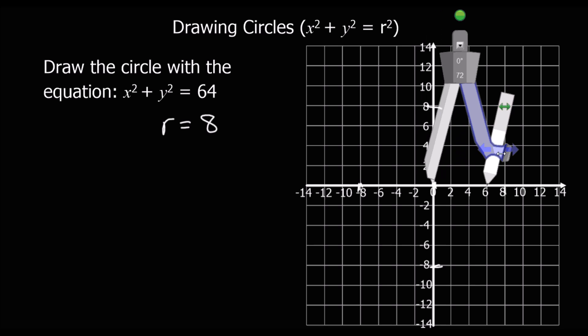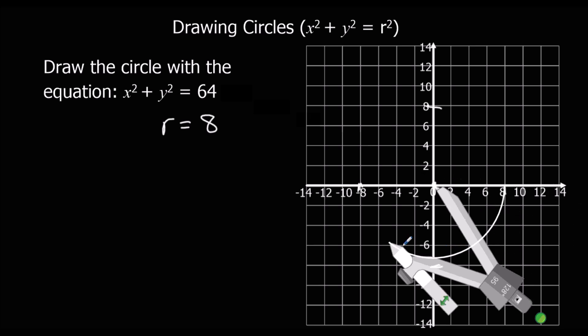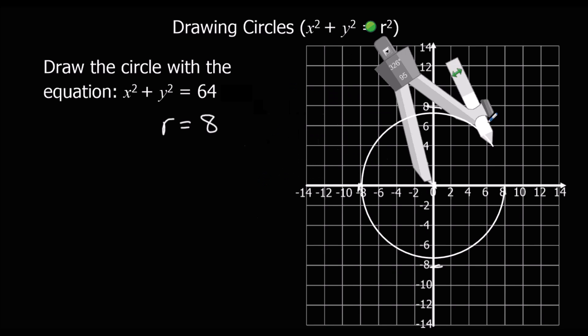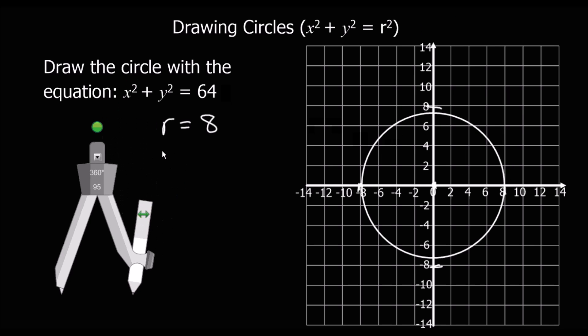We're going to extend this out to 8, and we're just going to go around. So again, unfortunately it has not drawn it completely accurately, but you get the point. So it should go through 8 and minus 8.